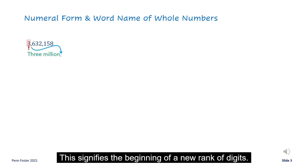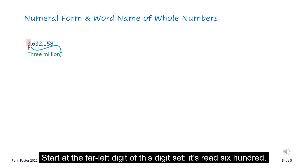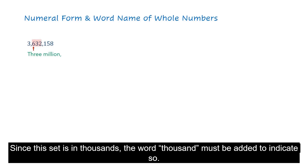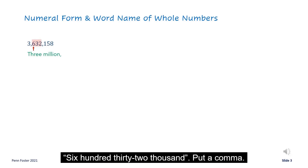This signifies the beginning of a new rank of digits. Start at the far left digit of this digit set — it's read as 600. The next two digits are read as 32. Since this set is in the thousands, the word thousand must be added to indicate so: 632 thousand.